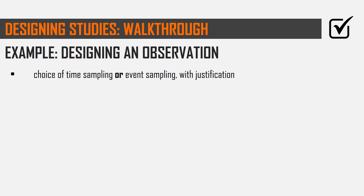The next bullet point is time sampling or event sampling — again, with justification. These are about how or when you actually collect your data using your tally table with behavioral categories. Time sampling is where you set certain intervals and only record data at those intervals — for example, every 30 seconds — ignoring what happens in between. Event sampling means recording every single time the behavior happens, so you don't miss important information between intervals.